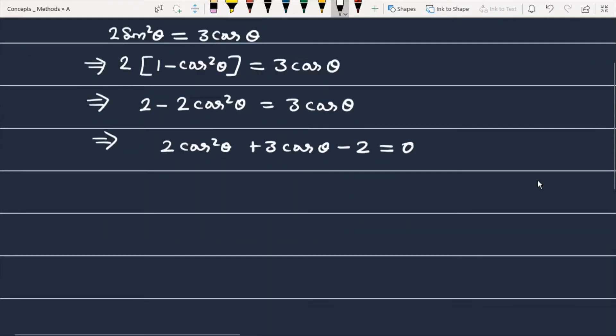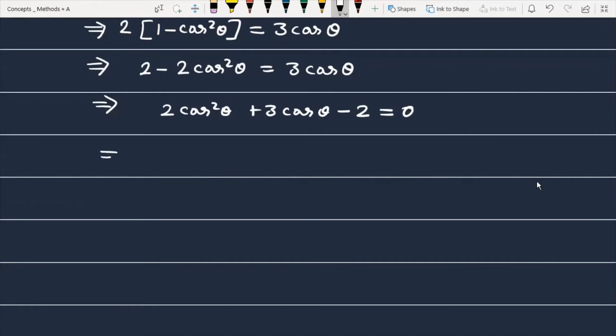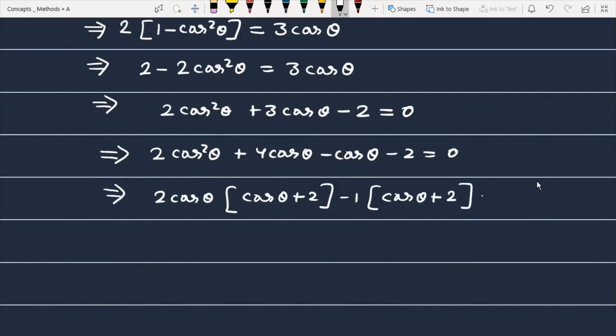Now we can easily check that we have to do the factorization here. When I do factorization, then this will be 2cosθ plus 4cosθ minus cosθ minus 2 equals 0. In the next step, this is 2cosθ, we have taken common here. In the bracket, you will get cosθ plus 2, this is a part. And minus 1 is coming here, and this becomes cosθ plus 2 and this equals 0.